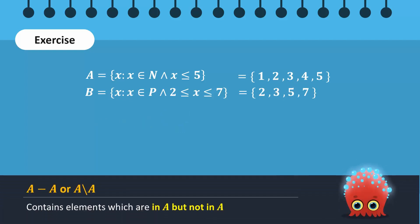A difference A includes elements that are contained in set A but not in set A. Since there is no such element, this is an empty set. Similarly, B difference B is also an empty set. When we take the difference of a set with itself, the result will always be an empty set.